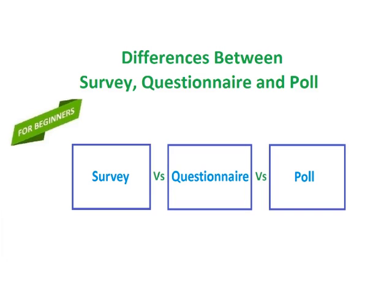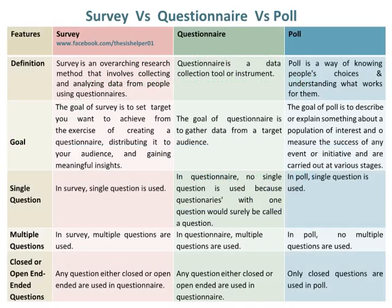Differences between Survey, Questionnaire, and Poll. Survey is an overarching research method that involves collecting and analysing data from people using questionnaires. Whereas, questionnaire is a data collection tool or instrument. Whereas, poll is a way of knowing people's choices and understanding what works for them.